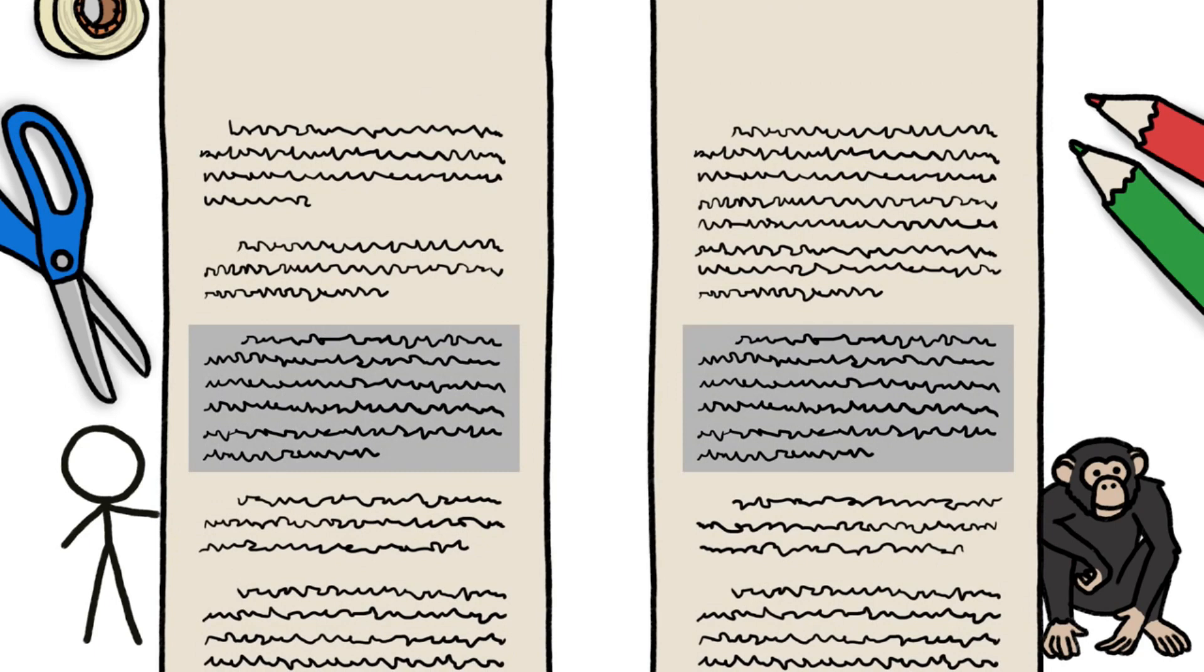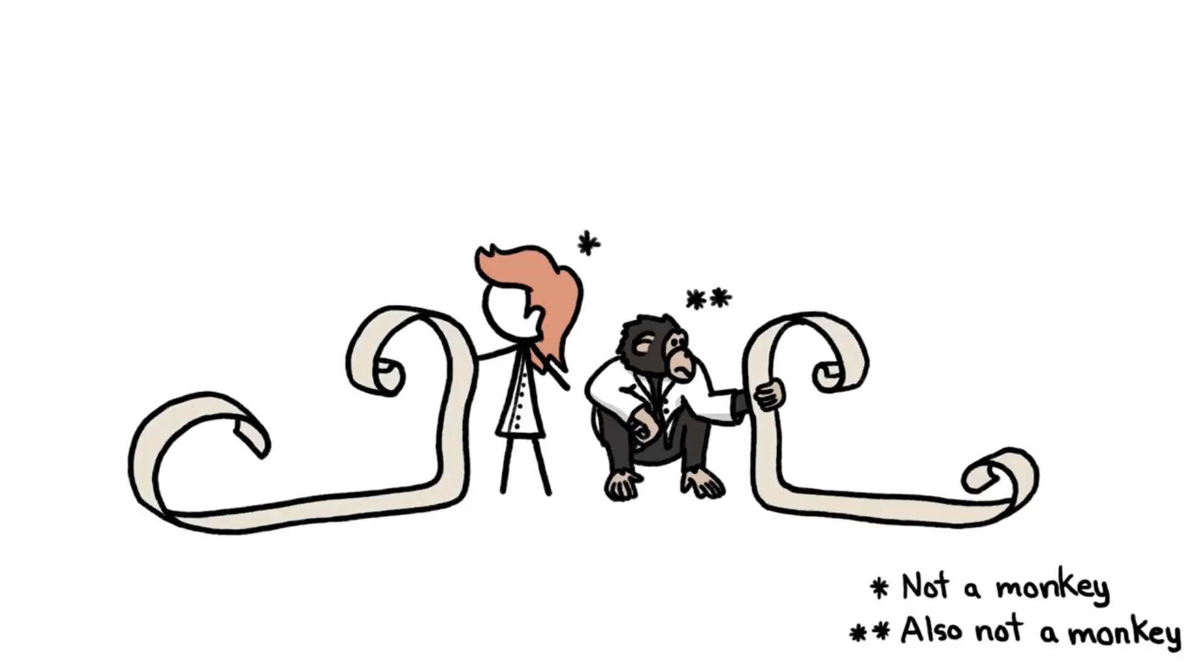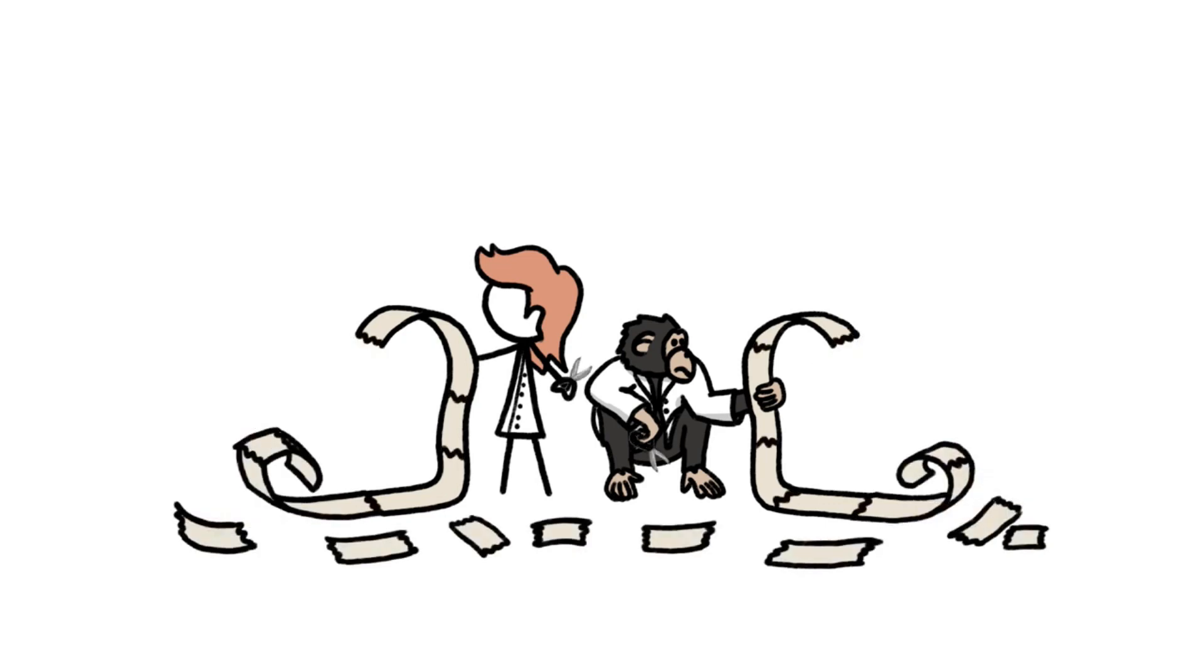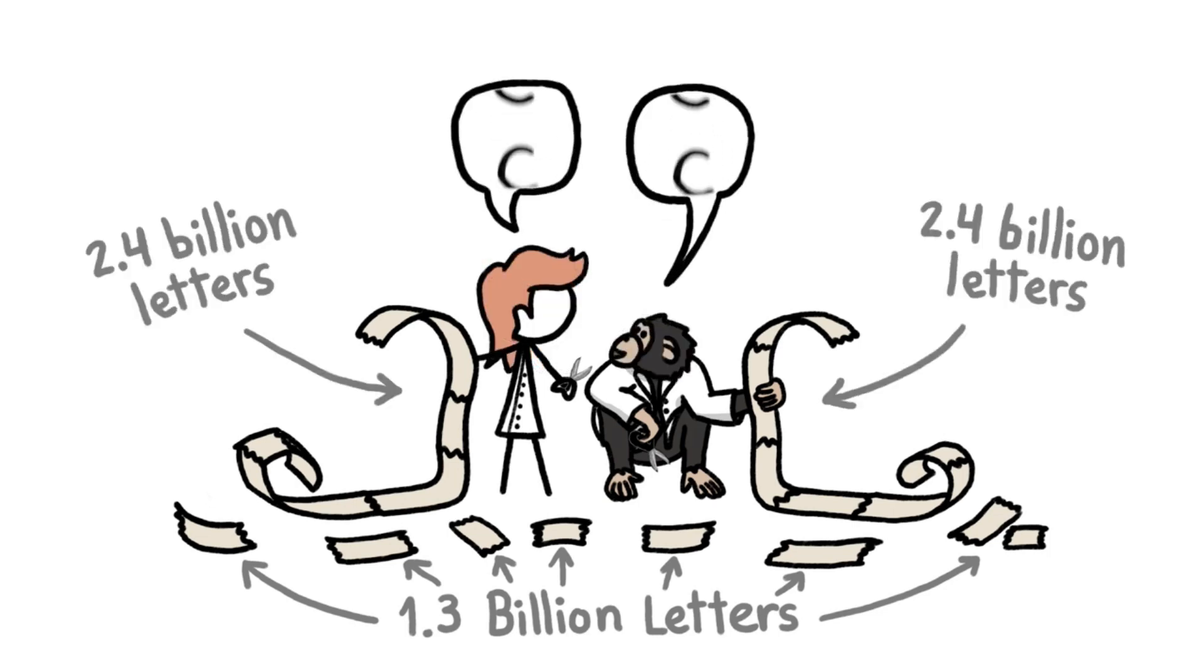And what about identical paragraphs that appear in both genomes but in different places, or in reverse order, or broken up into pieces? Rather than monkey around with these difficult questions, the researchers simply excluded all the large mismatch sections—a whopping 1.3 billion letters in all—and performed a letter-by-letter comparison on the remaining 2.4 billion, which turned out to be 98.77% identical.